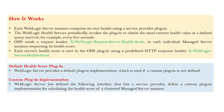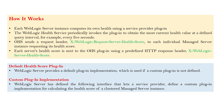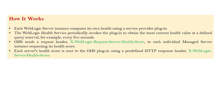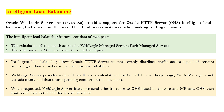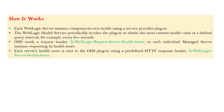You have two different kinds of plugins. You can have a default health plugin, used to calculate the health score of each managed server. By default, you have a default health score plugin that you can enable in your application servers or OHS and utilize. Apart from that, if you have custom requirements, there is a feature where you can define your own custom plugin for the implementation as well. The parameters checked include CPU load, heap usage, work manager, stuck thread count, and data source pending connection.